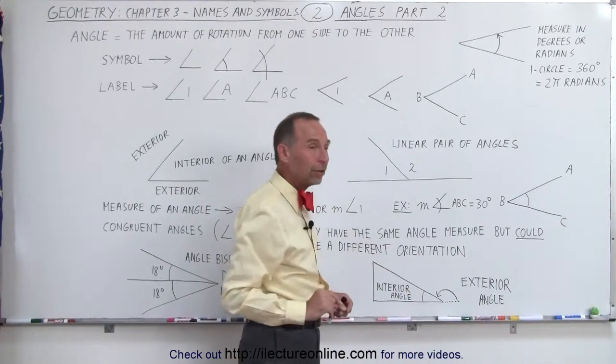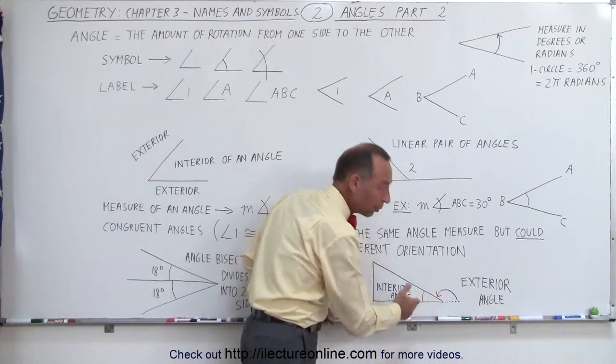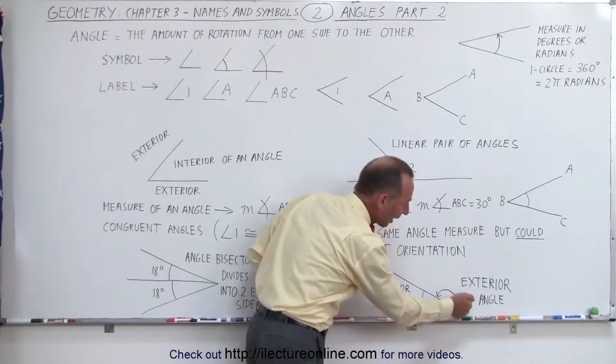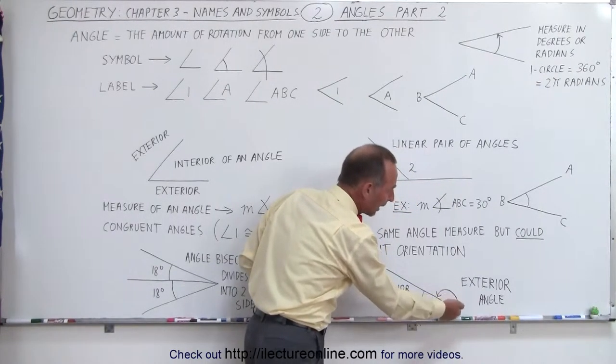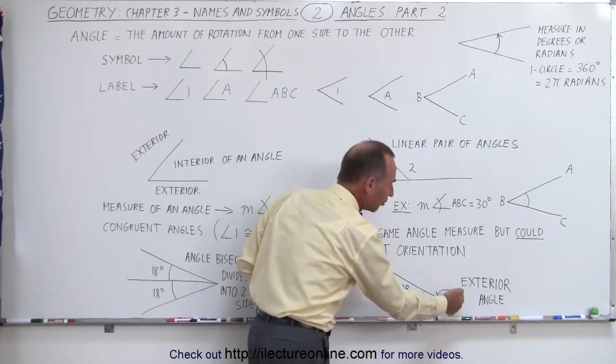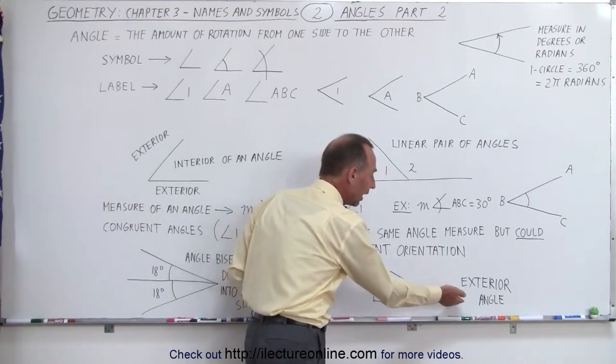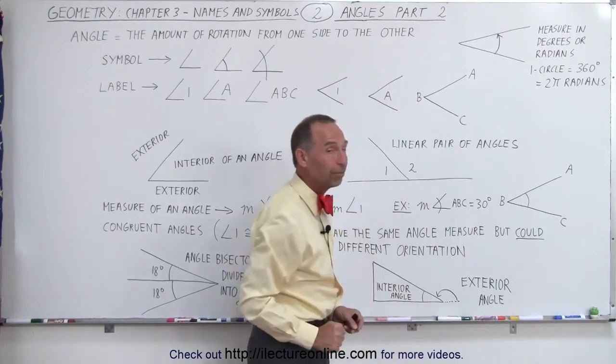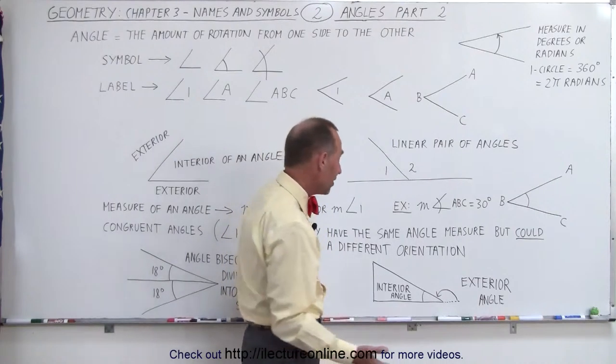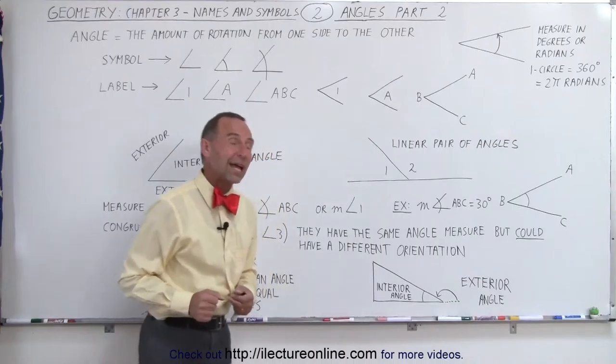And finally we have two types of angles. Here we've drawn a triangle and we're talking about this angle right here. We can call this angular measure here or this angle here the interior angle. But then if we imagine that the line here, the base of the triangle, when the base of the triangle is drawn continuously like this with a dashed line and then we draw a symbol here where we have a rotation from that line to this line, we call this the exterior angle relative to this. So this is called the interior angle and this is called the exterior angle.